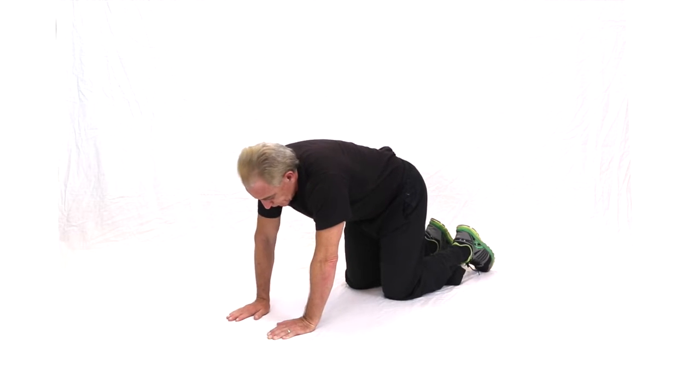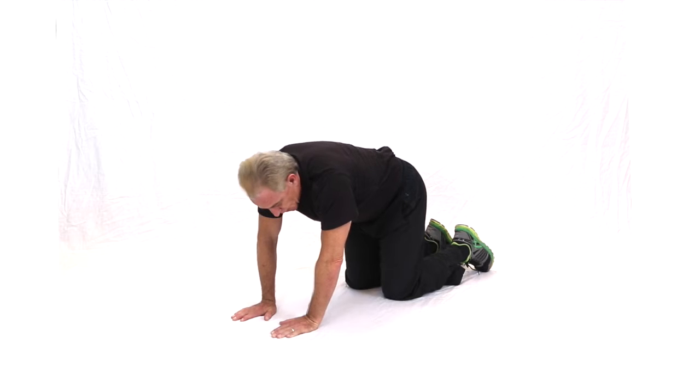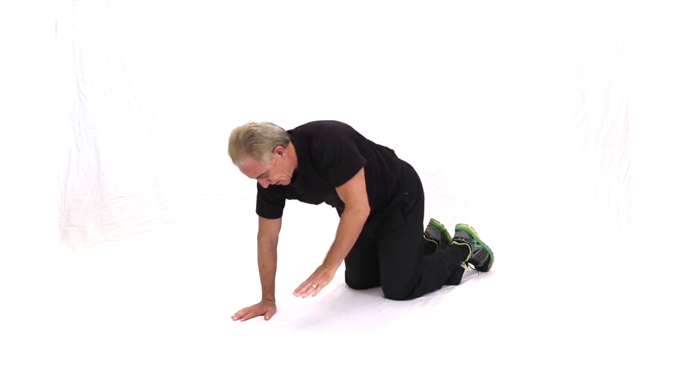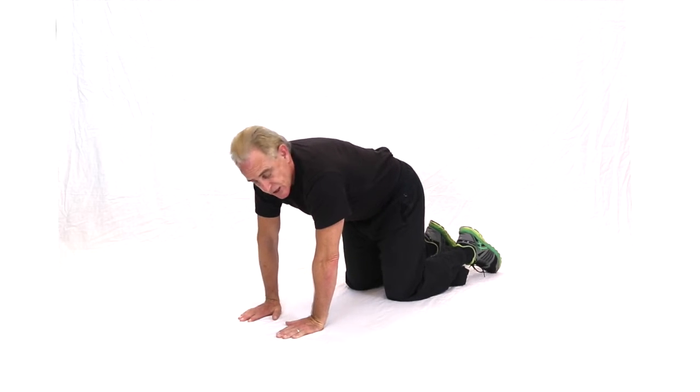This is a reach and pull. Now for reach and pull, we start from what's called a tabletop position. For those of you that are not familiar with it, hands are right underneath the shoulders, knees are right underneath the hips, so you're really solid like a tabletop.